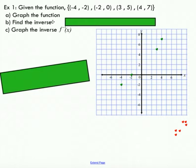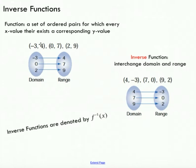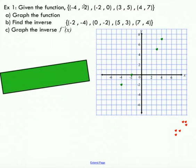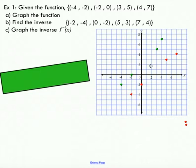To find the inverse of this function, you just interchange the x and y coordinates. I've done that here — I've just switched my x and y coordinates around. I'll quickly plot these points, and then we're going to look at an interesting pattern that happens once we've plotted these points and compare it to our original function. The green is our original function; the red is our inverse function.